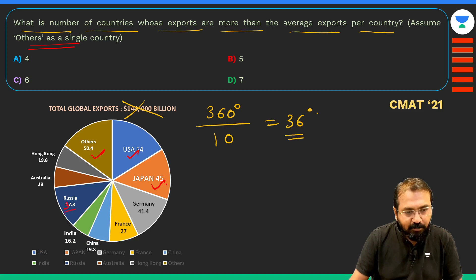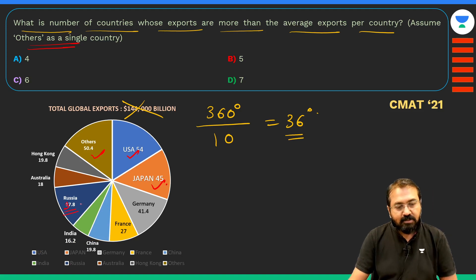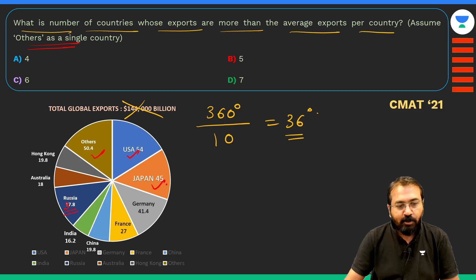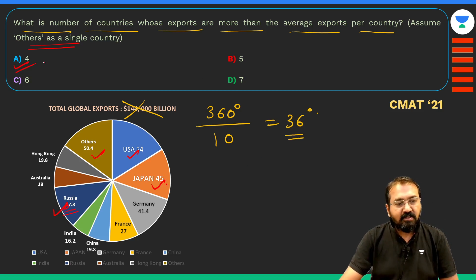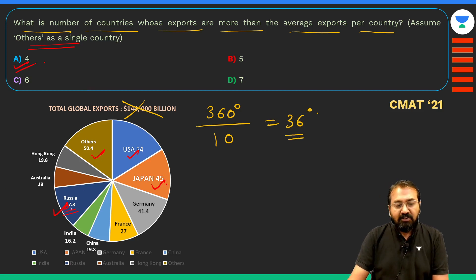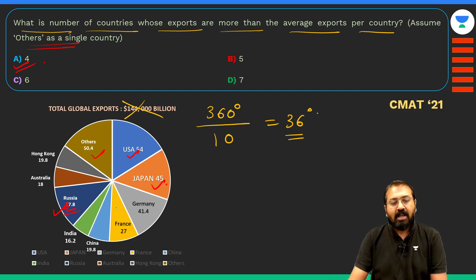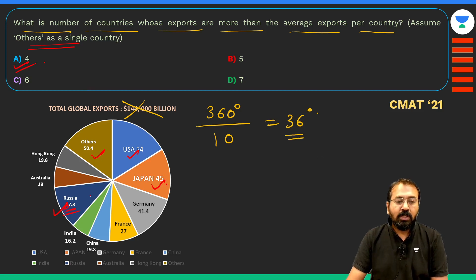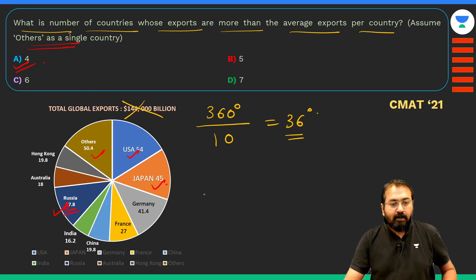Russia is 37.8° — that was a typing mistake in the data. So Russia also satisfies the condition, giving four countries in total that have exports above the 36° average. Even with this value of 37.8°, the angles still don't add up to 360 degrees.